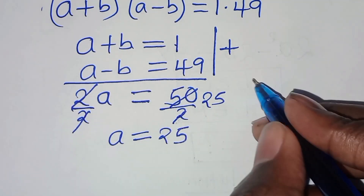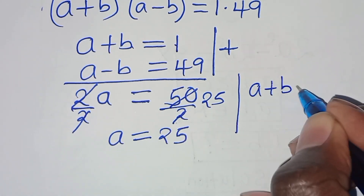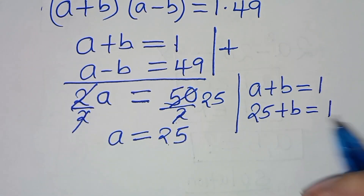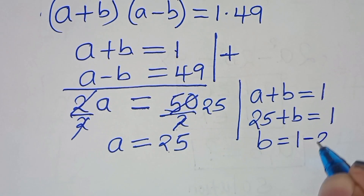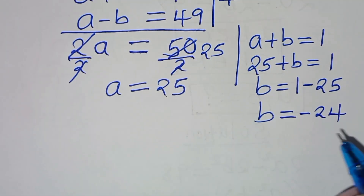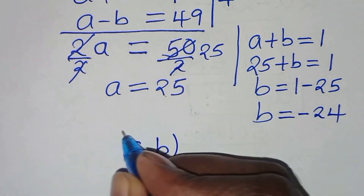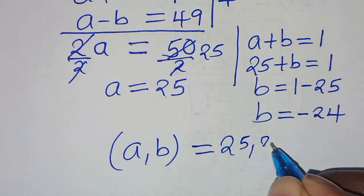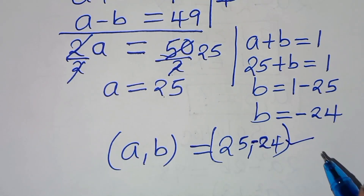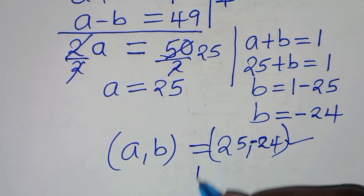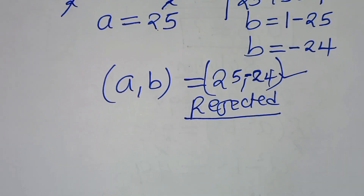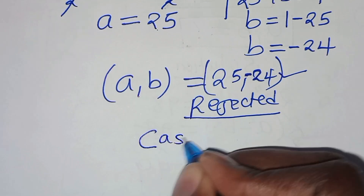For the corresponding value of b, using a + b = 1 and substituting a = 25, we have 25 + b = 1, so b = 1 − 25 = −24. We have (a, b) = (25, −24). Since −24 is not a natural number, this solution is rejected.